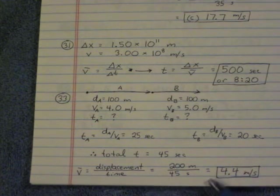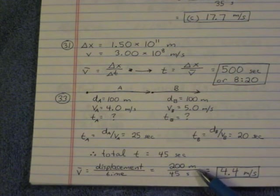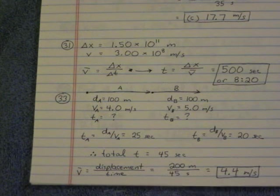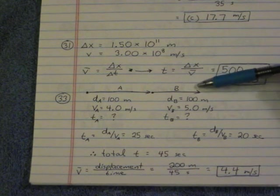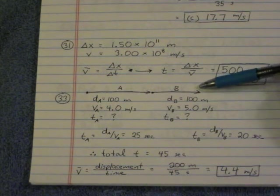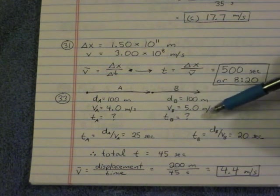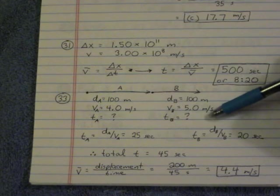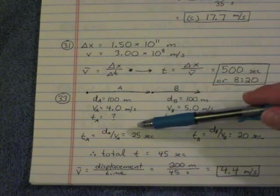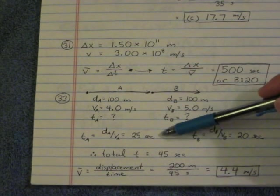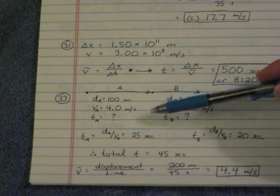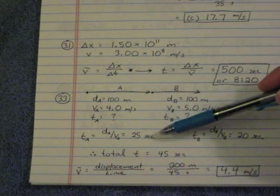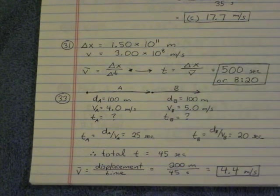We know that the displacement was 200 meters, but we need to find the total time. So let's break it down into the two legs of the trip. I've labeled them A and B. So what is the time for A? What is the time for B? Then we'll add those up together. So the time for A is the distance for A divided by speed. So the distance for A was 100 meters divided by the speed, 4 meters per second. So the time for part A is 25 seconds.